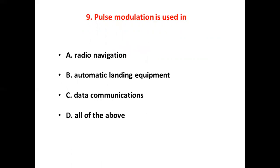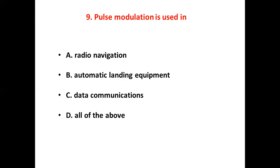Ninth bit. Pulse modulation is used in. Option A: Radio navigation. Option B: Automatic landing equipment. Option C: Data communications. Option D: All of the above. Answer: Option D, All of the above.